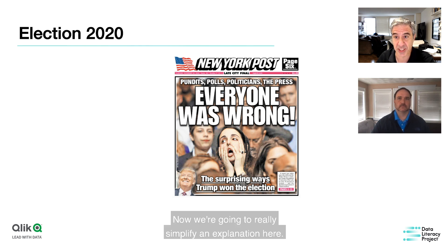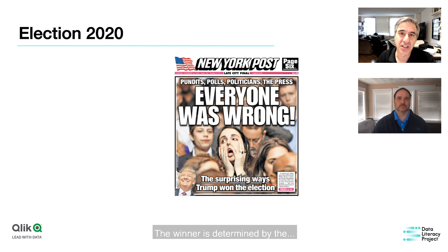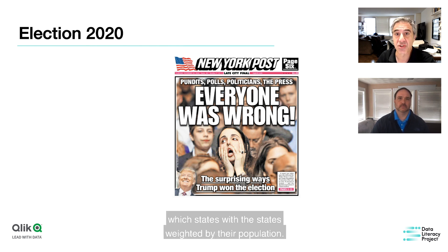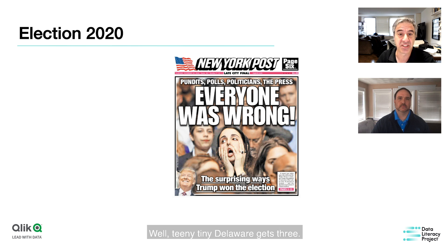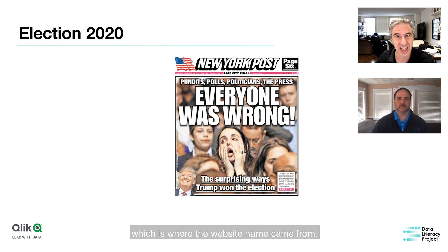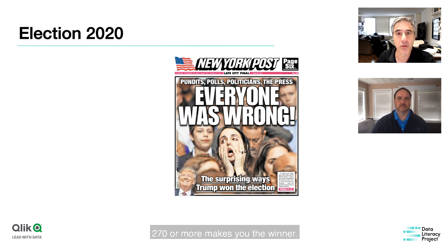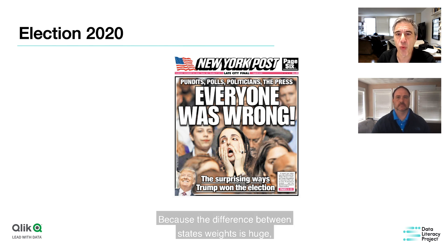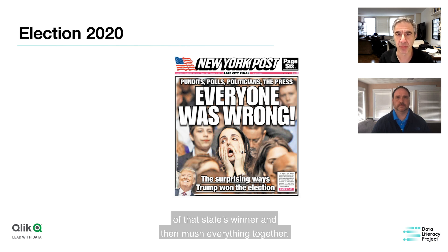The winner of a U.S. presidential election is determined by who wins which states, with states weighted by their population. A huge state like Texas has a weight of 38, while tiny Delaware gets three. These weights add up to 538 — which is where the website FiveThirtyEight.com got its name — and a majority of 538 would be 270. Getting 270 or more electoral college votes makes you the winner.